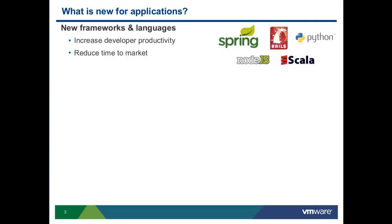So what's new for applications? What's in the landscape? First and foremost, new frameworks and languages, where the primary reason is to increase developer productivity and reduce time to market. You get frameworks like Spring, Node.js, Ruby on Rails and Sinatra, Scala, Python, and many more — a lot of frameworks available for developers to build richer applications and get them faster to market.